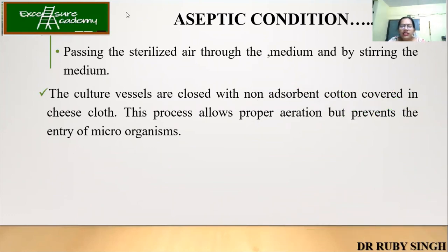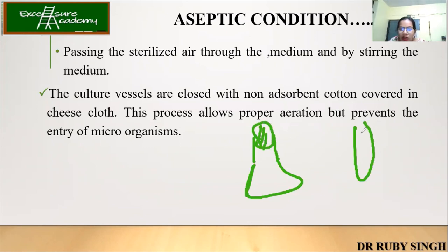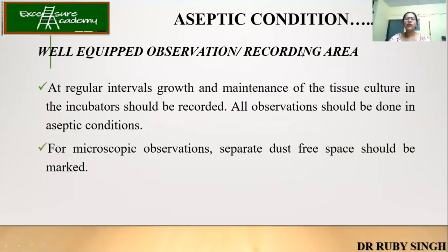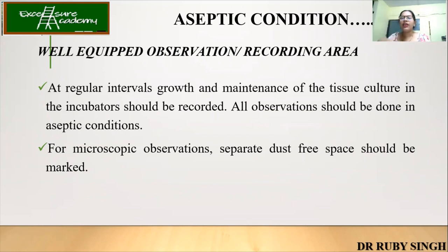Culture vessels such as conical flasks or test tubes are plugged with non-absorbent cotton plugs, and on top you have muslin cheesecloth covering, all required to prevent entry of microorganisms. You also need an observation and recording area with a microscope, because from the naked eye it is not always possible to see contamination. Under the microscope you can check whether any contamination or unnecessary growth is happening, and that can be recorded and observed. The area should be dust-free, as dust might be confused with microbes.